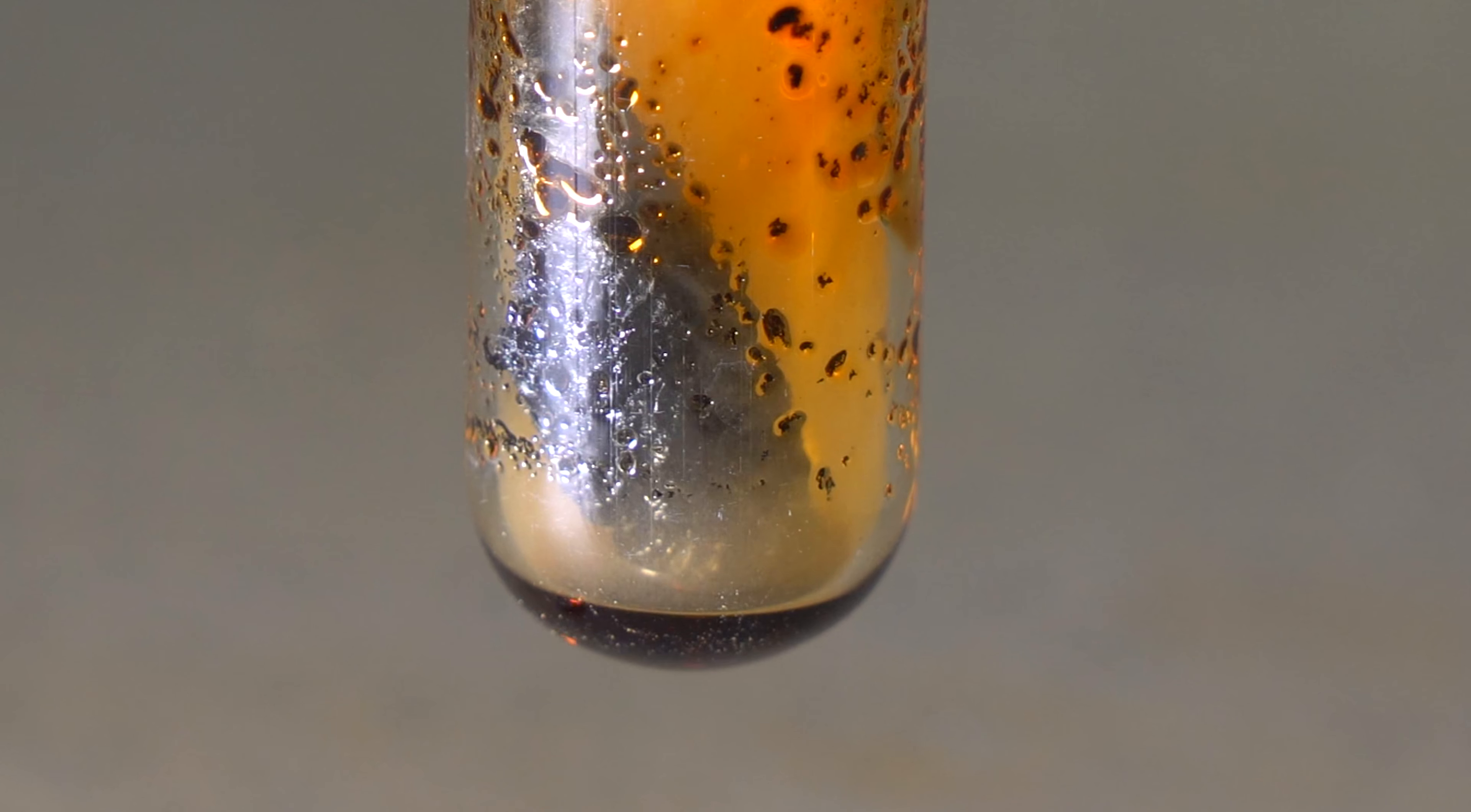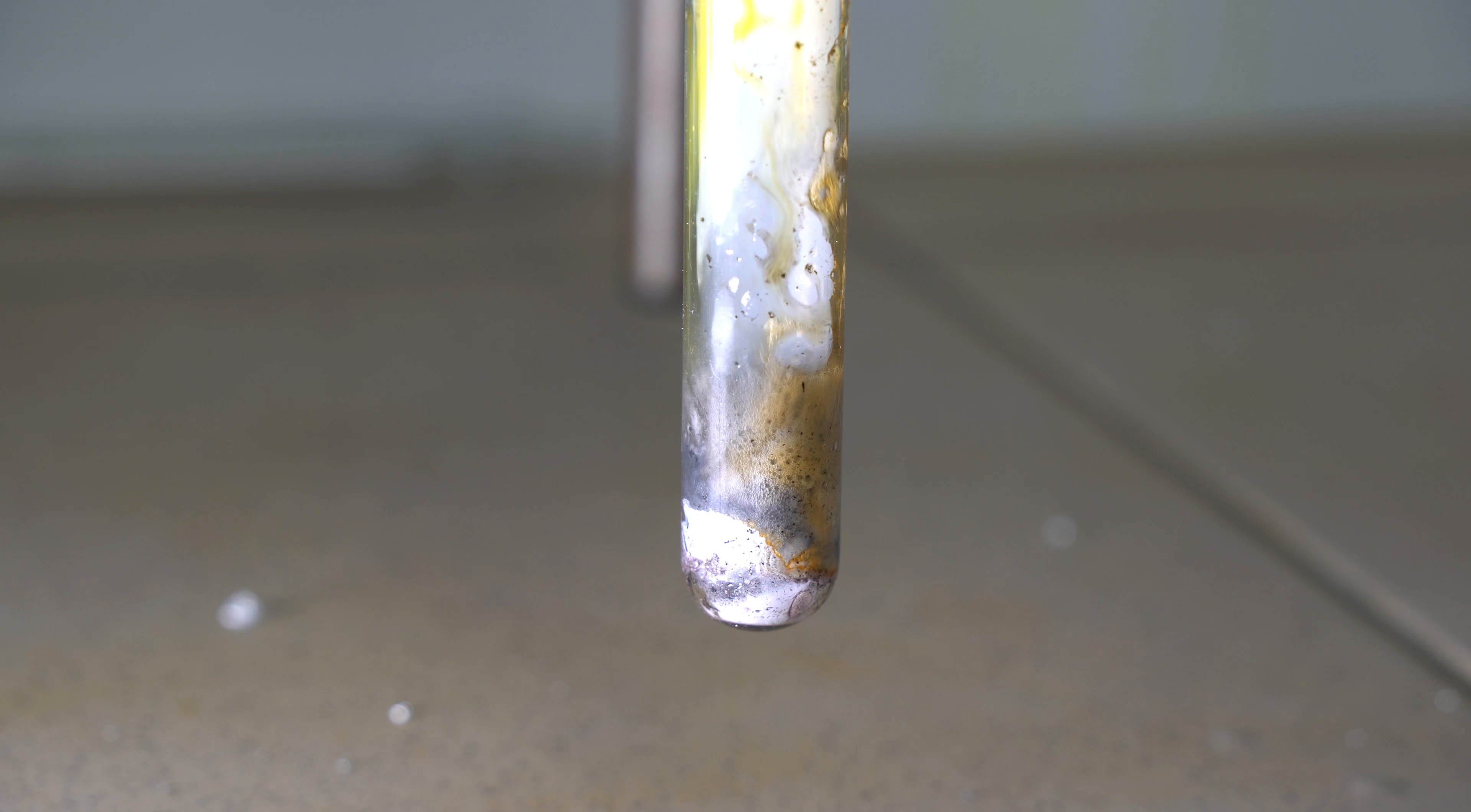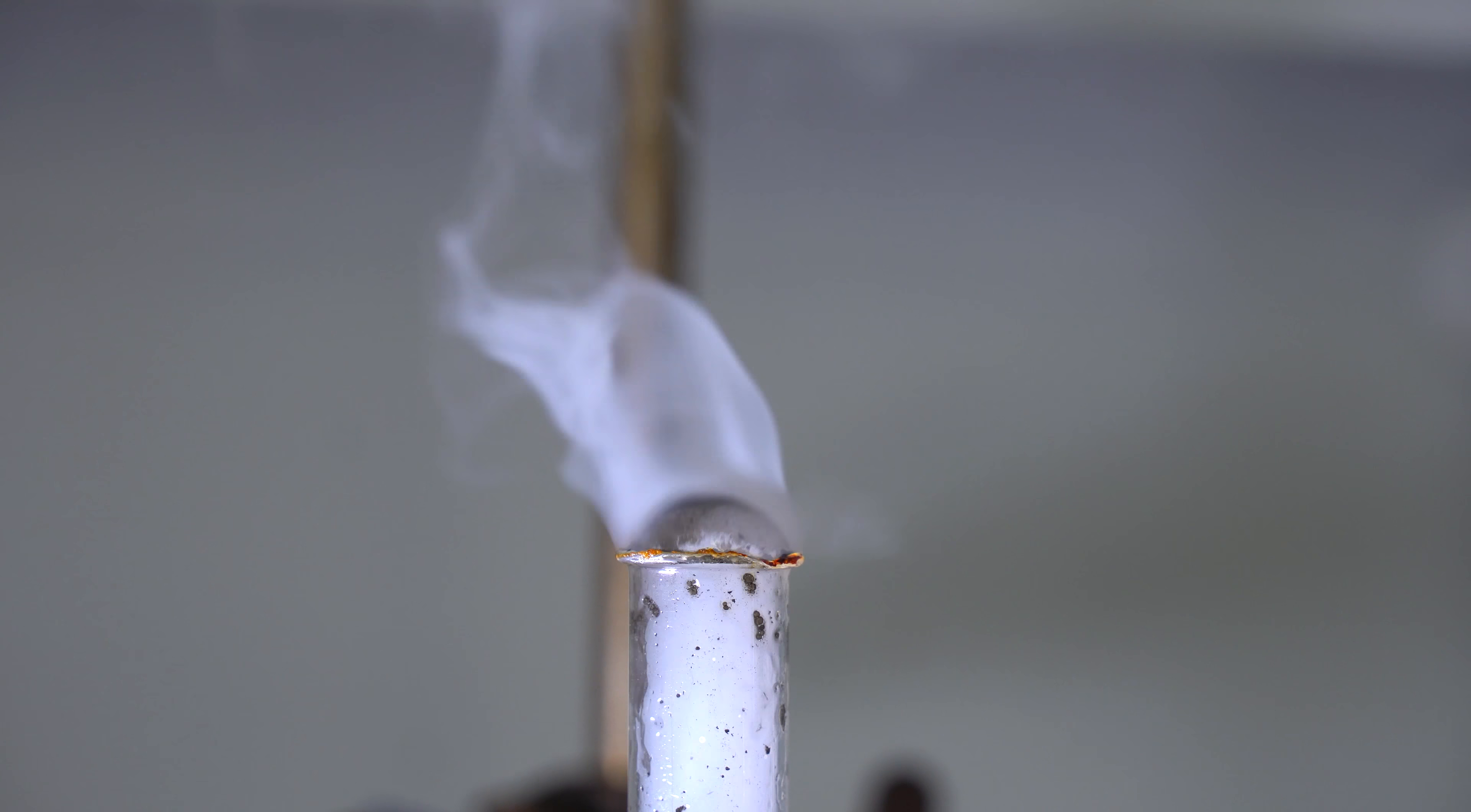When the reaction is over, what's left in the test tube is aluminum bromide, and when water is added to it, it breaks down into aluminum hydroxide and hydrogen bromide, which is breaking out of the test tube in the form of a thick white smoke.